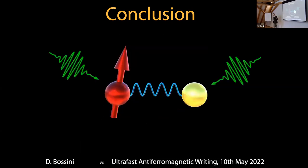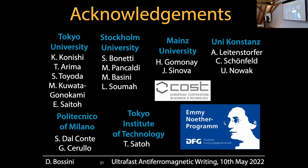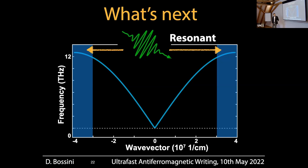What we demonstrated is that domain walls are not necessarily a nuisance — they can enable functionalities that are absent in a single-domain state. Relying on this hybrid excitation mechanism of charge and spins via the exciton-magnon, you can trigger a magnetic phase transition in less than a picosecond by amplifying coupled magnon modes. I've had many collaborators working on this and I'd like to acknowledge them and the funding agencies.